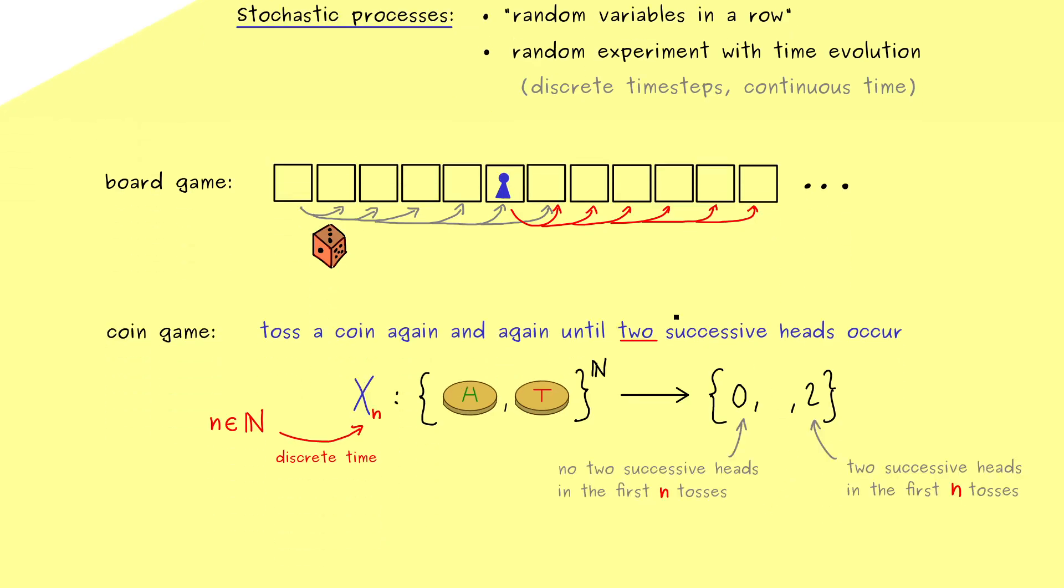If we don't find two successive heads in the first n tosses we say we have 0. And on the other hand if we find them then we say the outcome is 2. But now you also see I left some space for the middle ground. This is because we obviously have the chance of getting two successive heads in the next round if the current toss is heads.